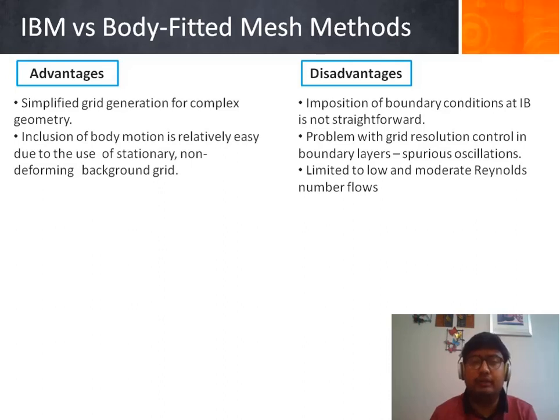However, the imposition of boundary conditions at immerse boundary is not so straightforward and there are also challenges with grid resolution control in boundary layers which can lead to unphysical spurious oscillations in the results. Moreover, currently IBM is limited to low and moderate Reynolds number flows for accurate results.